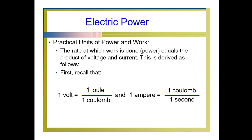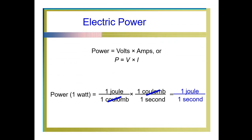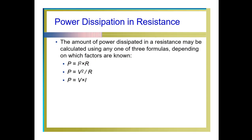Electrical power: the rate at which work is done is equal to the product of voltage and current. One Volt equals one Joule per Coulomb, and one Ampere equals one Coulomb per second. When we multiply one Volt and one Ampere, we get power. Power is equal to V times I, calculated in Joules per second. The other unit for power is Watt, named after the pioneer researcher Watt who worked on power calculations.